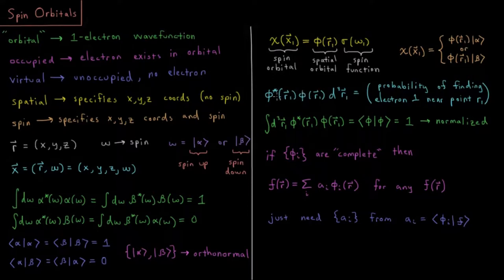So multiplying that probability density times some volume element, dx, dy, dz, indicated here as d cubed r, that would give us the probability of finding electron 1 near location r1.